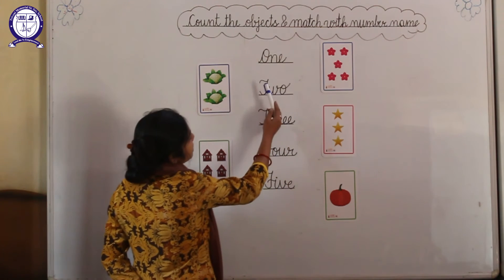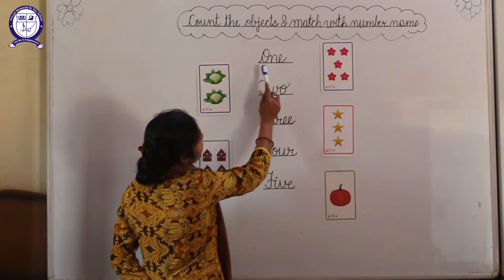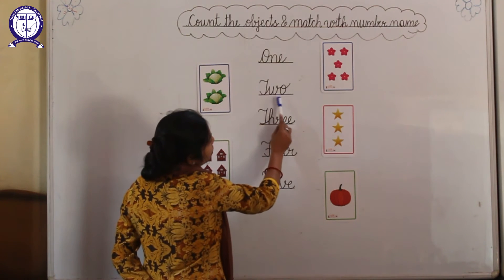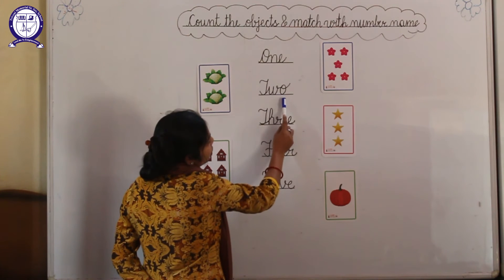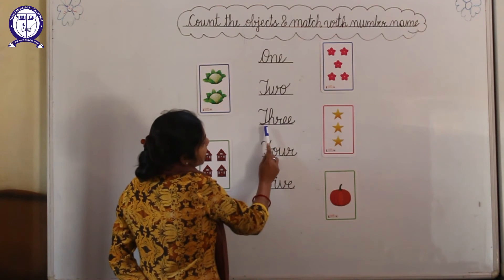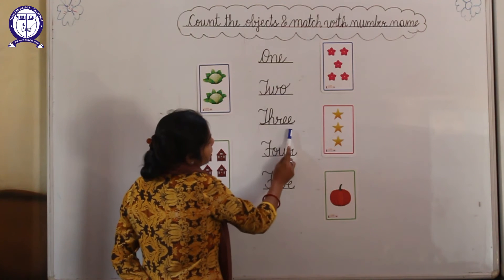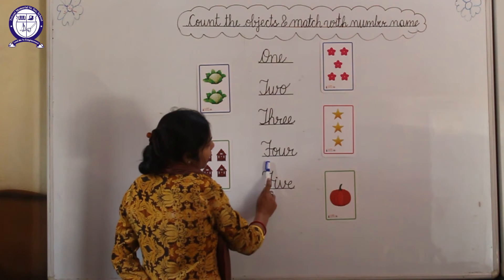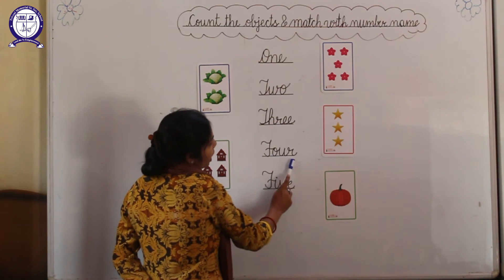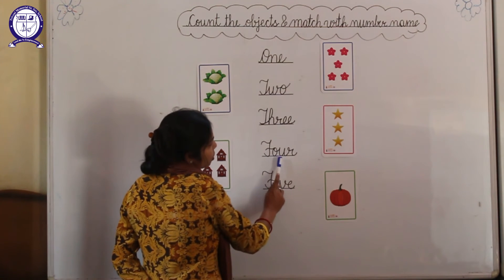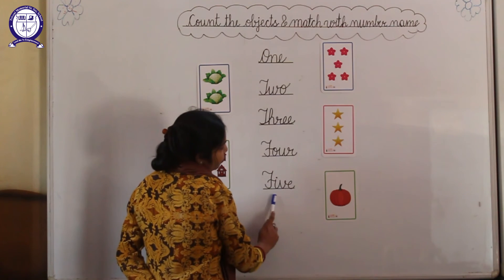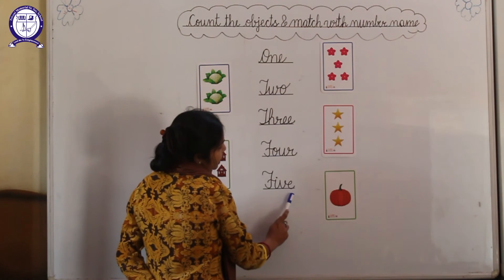Now let's revise number names. Speak with me the spellings, beta. O-N-E, 1. T-W-O, 2. T-H-R-E-E, 3. F-O-U-R, 4. F-I-V-E, 5.